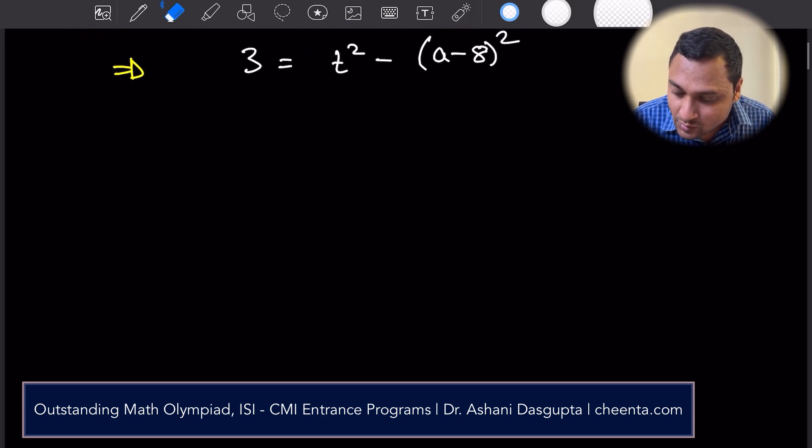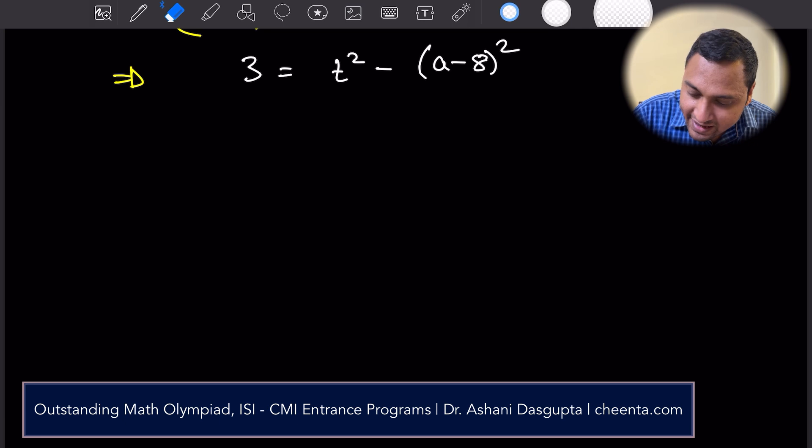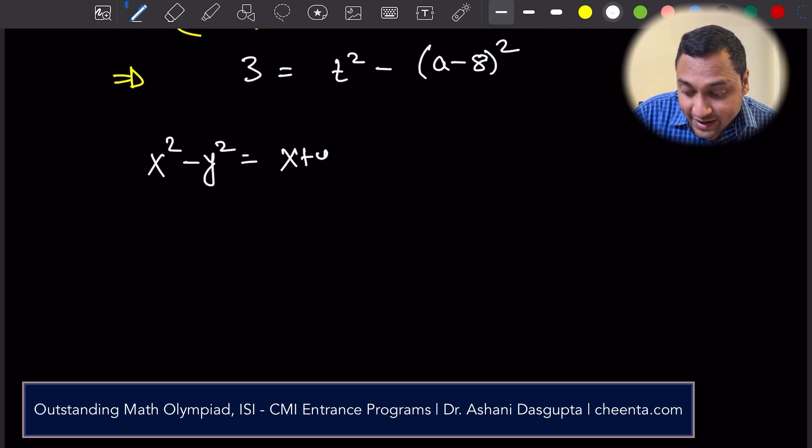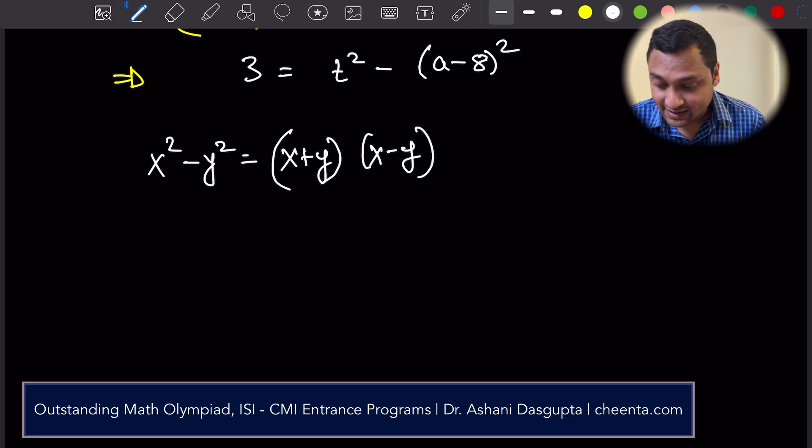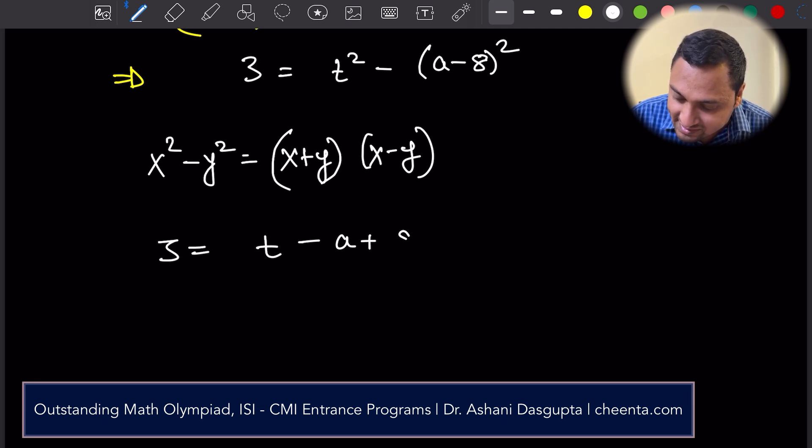What is the difference of square identity? It is x square minus y square equal to x plus y times x minus y. That is the difference of square identity. We will be using that here. 3 is equal to t minus a plus 8 times t plus a minus 8.